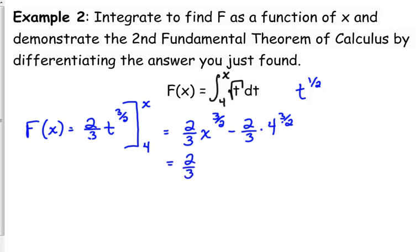So when we simplify, we've got 2/3 x to the 3/2 minus, let's see here, 4 to the 3/2. The square root of 4 is 2, 2 cubed is 8, so that's 16 over 3, 2/3 times 8, 16 over 3. All right, so that is finding big F as a function of x. That's what y'all just did in that last example before we started these new ones.